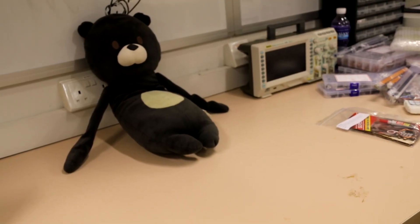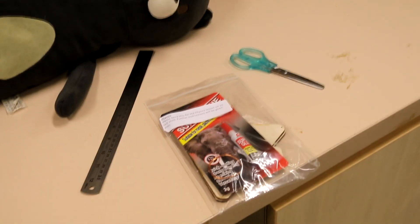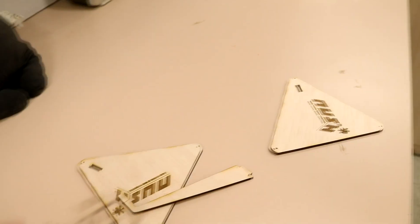But first, you will need a ruler and a pair of scissors. The package will also provide you with four wooden pieces, a tube of superglue and copper wire.